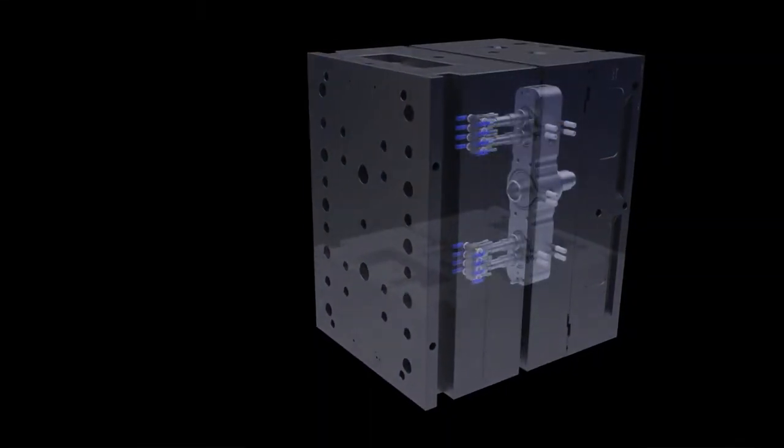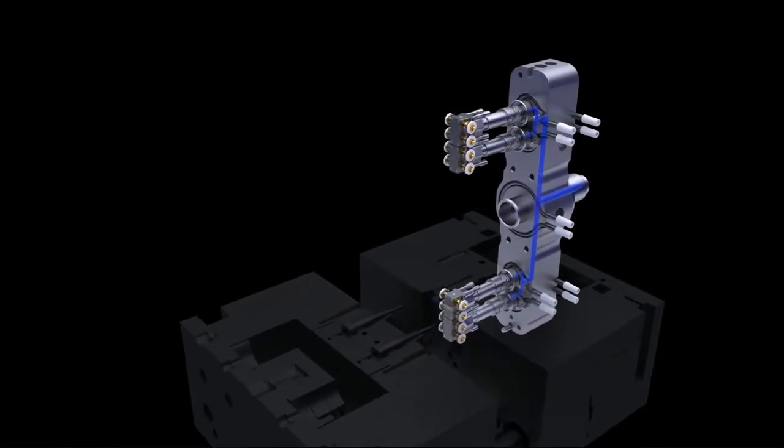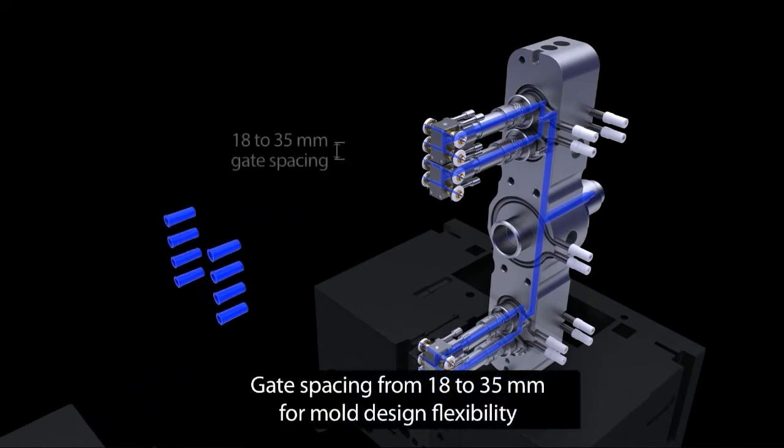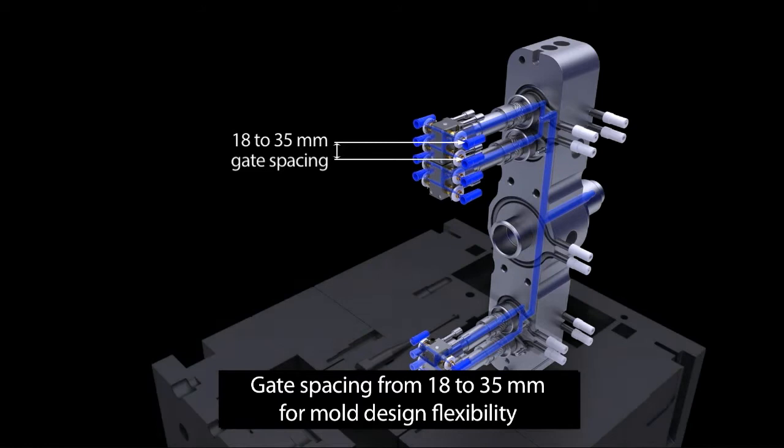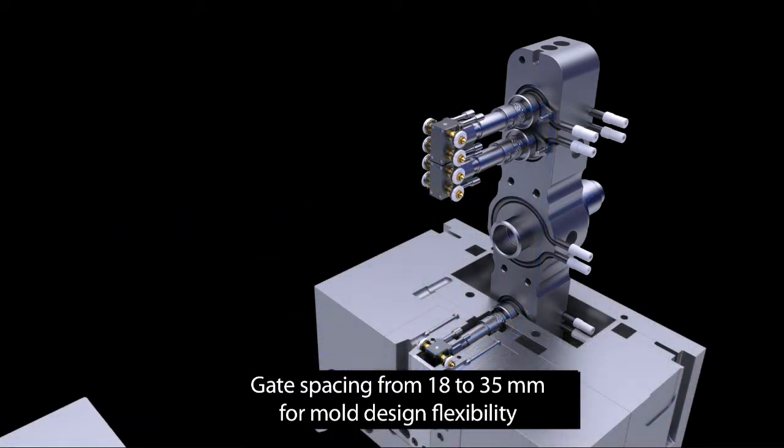The Sidegate inline technology includes the same cavity interface and standard tip configuration as the original Sidegate product. The inline design allows for cavity pitch of 18mm up to 35mm and the initial product will include two standard pitch nozzle heads, 18mm and 25mm.